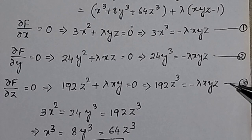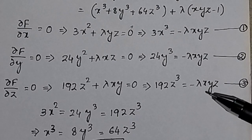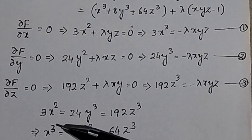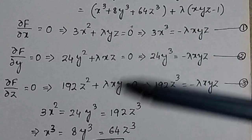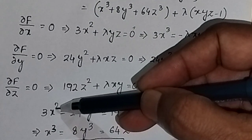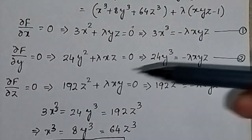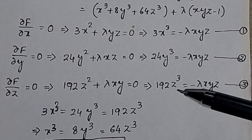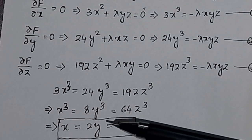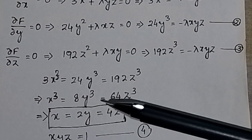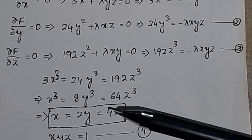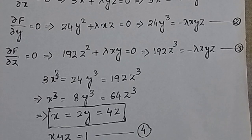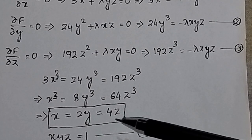In all three equations the right-hand side is the same: −λxyz. So we can write 3x³ = 24y³ = 192z³. Simplifying, x³ = 8y³ = 64z³, which gives x = 2y = 4z. We have now found the relation between x, y, and z.